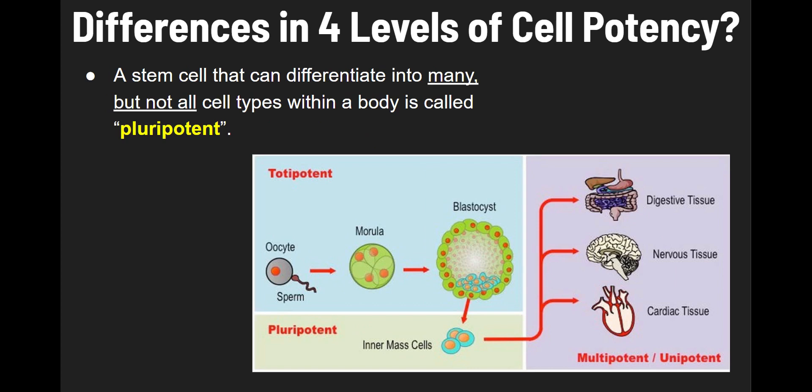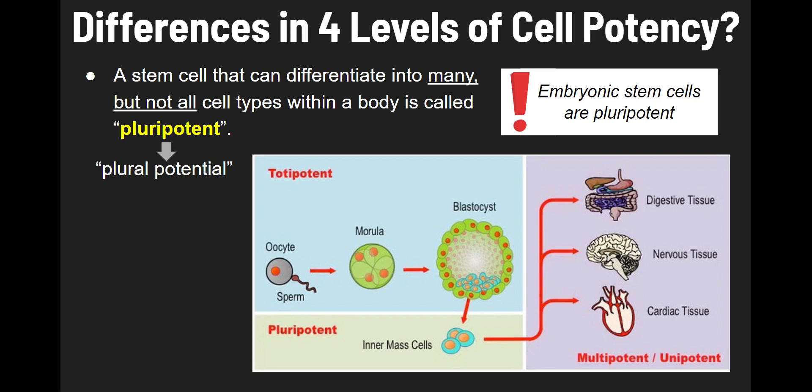Next, you have pluripotent. A stem cell that can differentiate into many, but not all, cell types within a body is called pluripotent — meaning plural potential. An example of a pluripotent cell would be an embryonic stem cell.